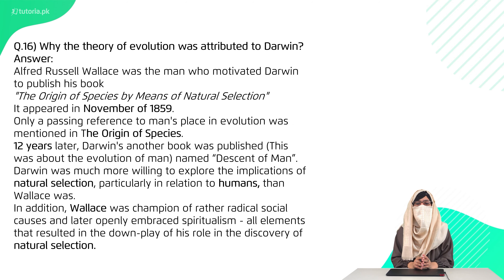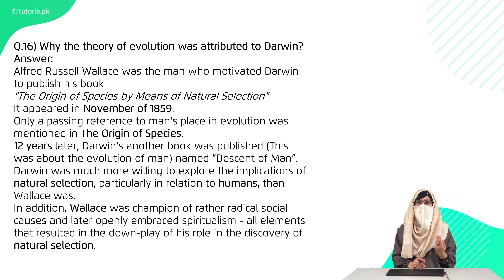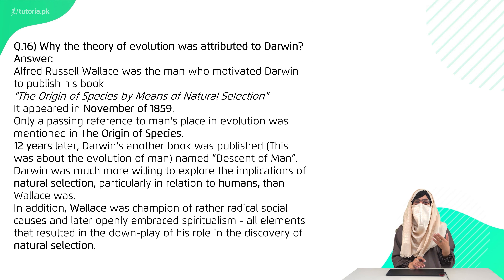Question 16 is: why was the theory of evolution attributed to Darwin? Both Darwin and Wallace had similar ideas. However, with the passage of time, Wallace's spiritual and religious beliefs grew stronger and he diverged from evolution toward special creation. Meanwhile, Darwin encouraged himself to present his name and authorship in the theory of evolution.